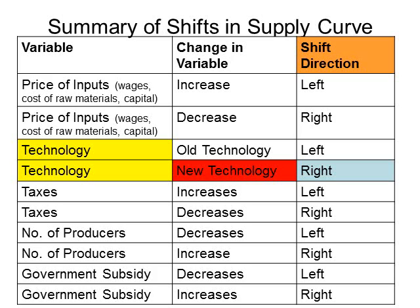So, when we work this problem, we know that the variable changing is technology, specifically the employment of new technology by the firm that produces computers, and this will cause the supply curve for computers to shift to the right.